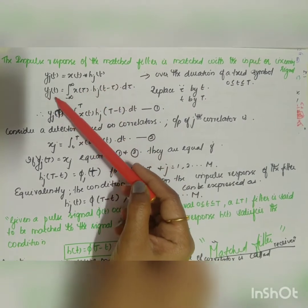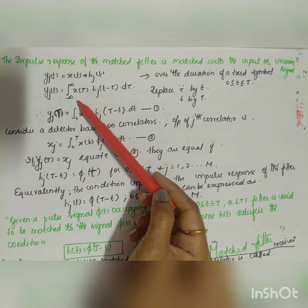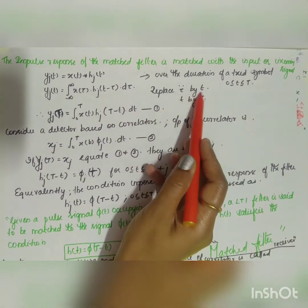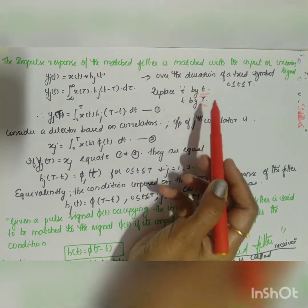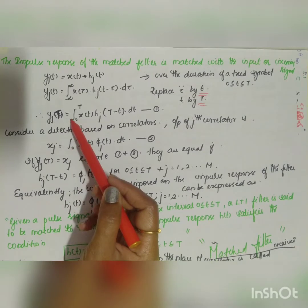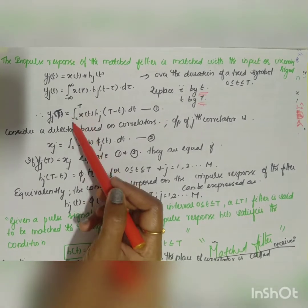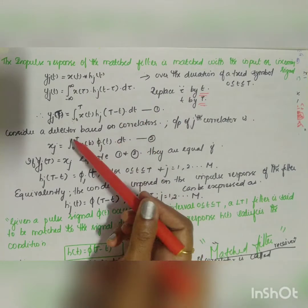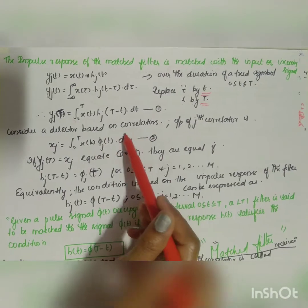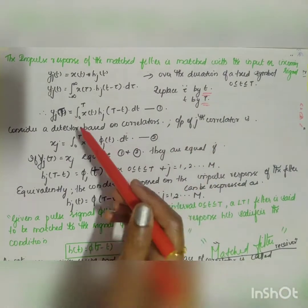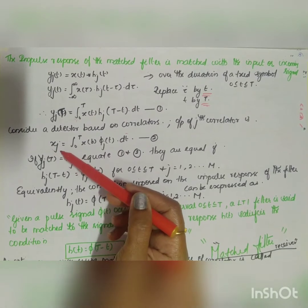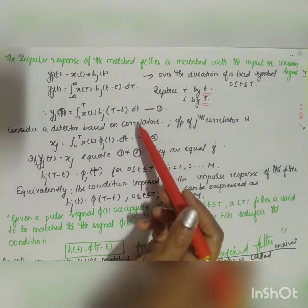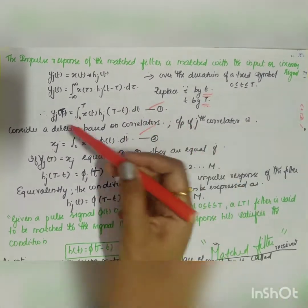Applying the convolution formula: y_j(t) = integral from −∞ to ∞ of x(τ) · h_j(t − τ) dτ. Replacing τ by t and the symbol duration t by T: y_j(T) = integral from 0 to T of x(t) · h_j(T − t) dt — call this Equation 1. For a detector based on correlators, the output of the j-th correlator is x_j = integral from 0 to T of x(t) · φ_j(t) dt — call this Equation 2.